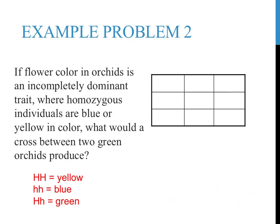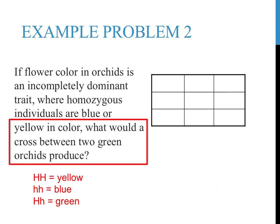In this case, I have chosen to represent yellow with two capital H's. Yellow is described as a homozygous trait, hence two of the same letter. Blue is also called homozygous, which I chose to represent by two lowercase h's. Green is an intermediate color between blue and yellow, and is therefore represented as capital H lowercase h. Now that we've set up a key for this problem, we can set up the Punnett square and try to answer the questions that are posed here.